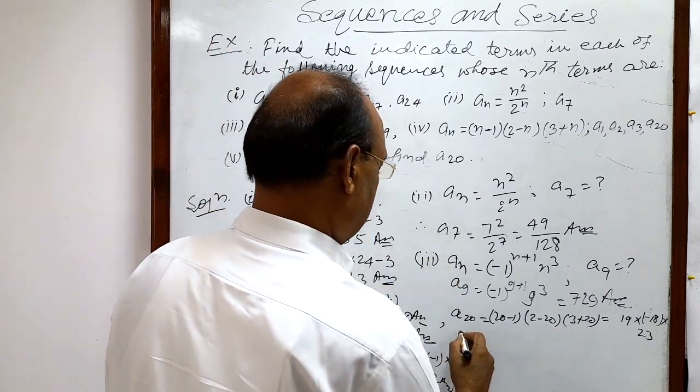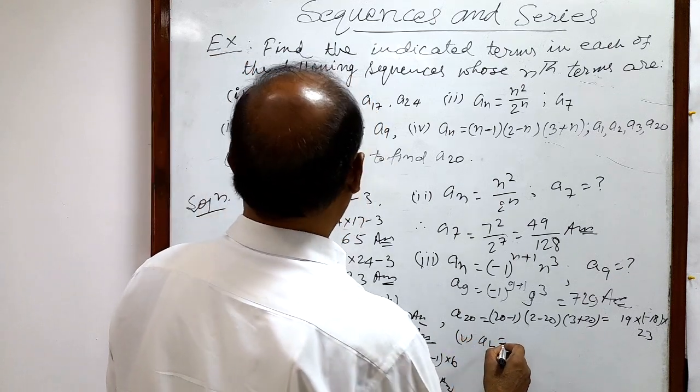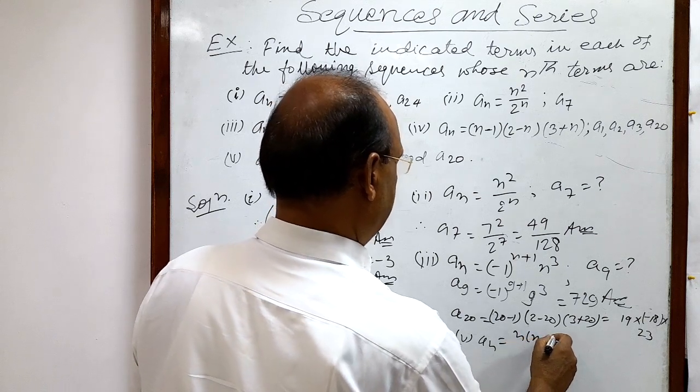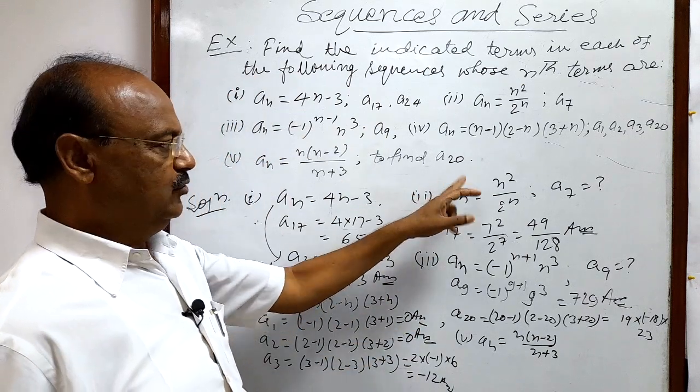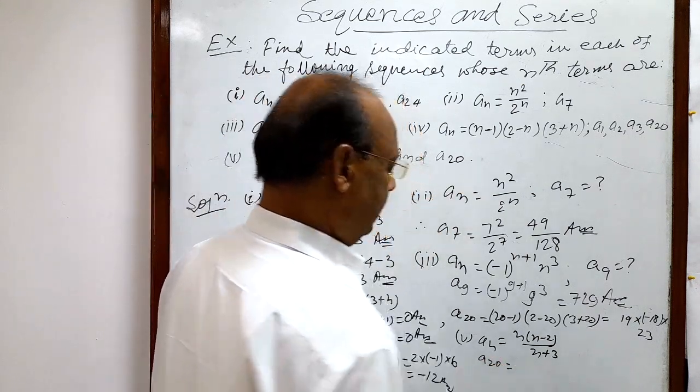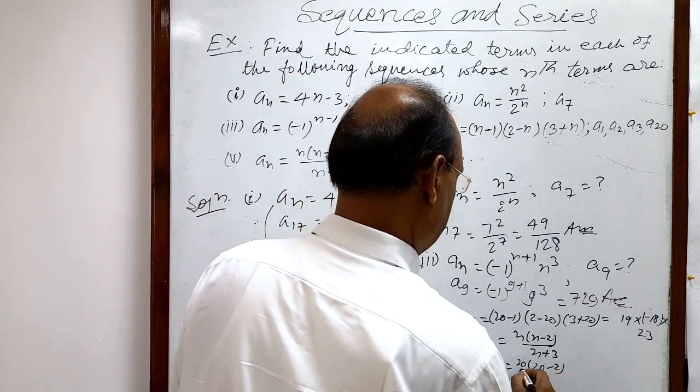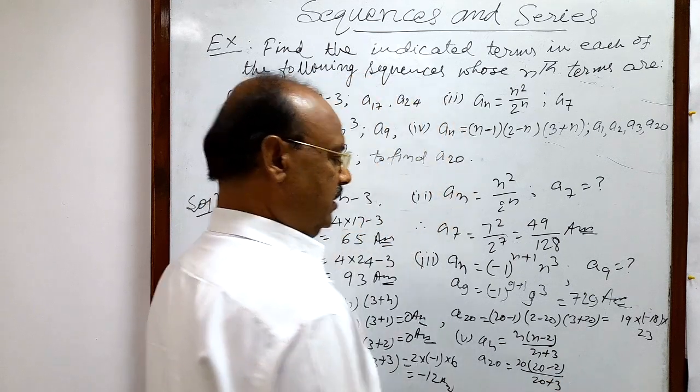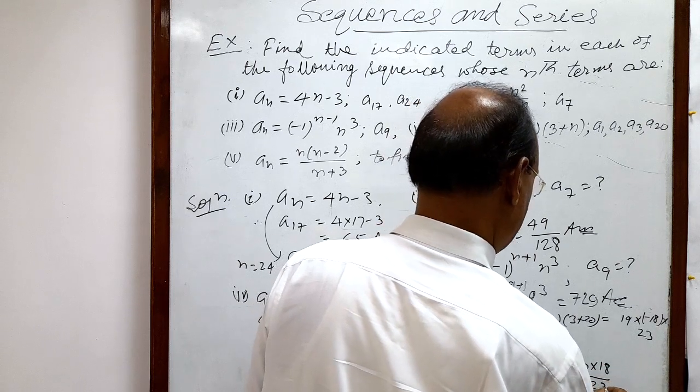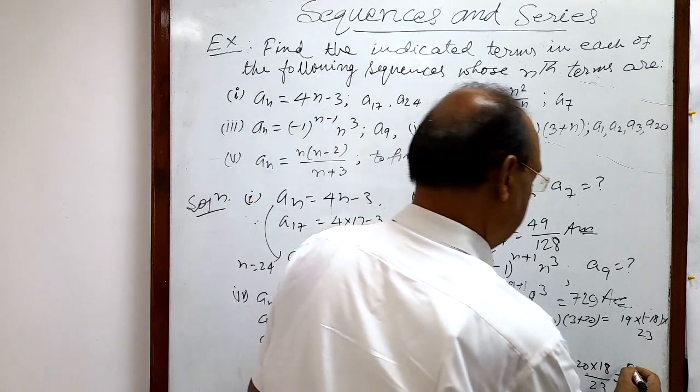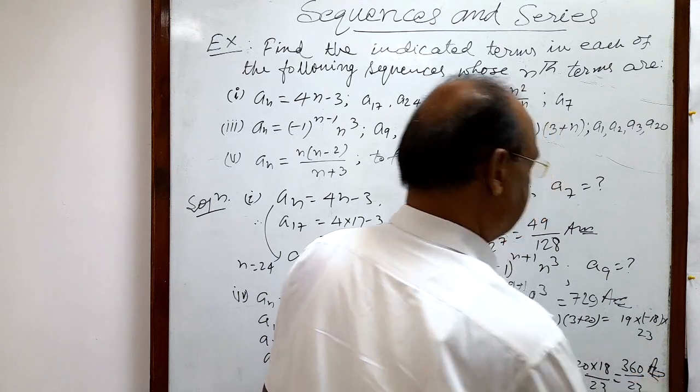And fifth question, last question. Here nth term is given: an is equal to n into n minus 2 upon n plus 3. We have to find out a20. So in place of n we have to put 20. So this is 20 into 20 minus 2 upon 20 plus 3. And this is equal to 20 into 18 by 23, and this is equal to 360 divided by 23. This is the answer.